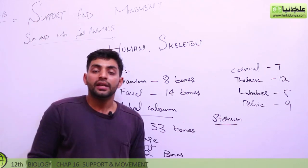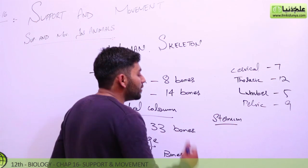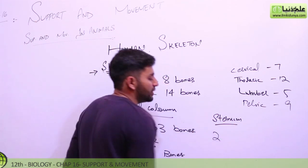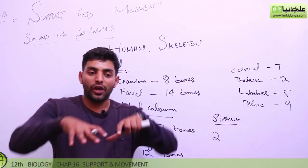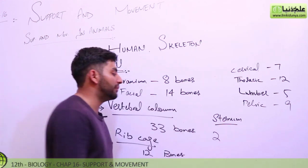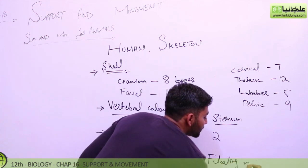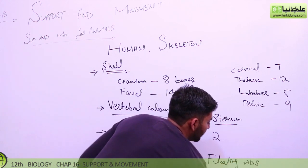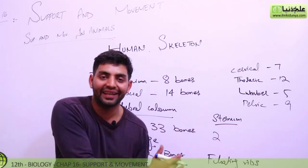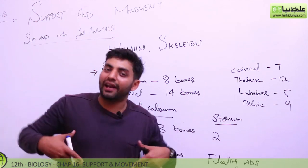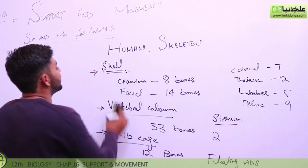The sternum has 10 bones attached to it, and there are 2 bones that are not attached to it. We give these the name of floating ribs. You will know that floating ribs are different — they are not connected all the way. If you put your hand there, you will feel the floating ribs.